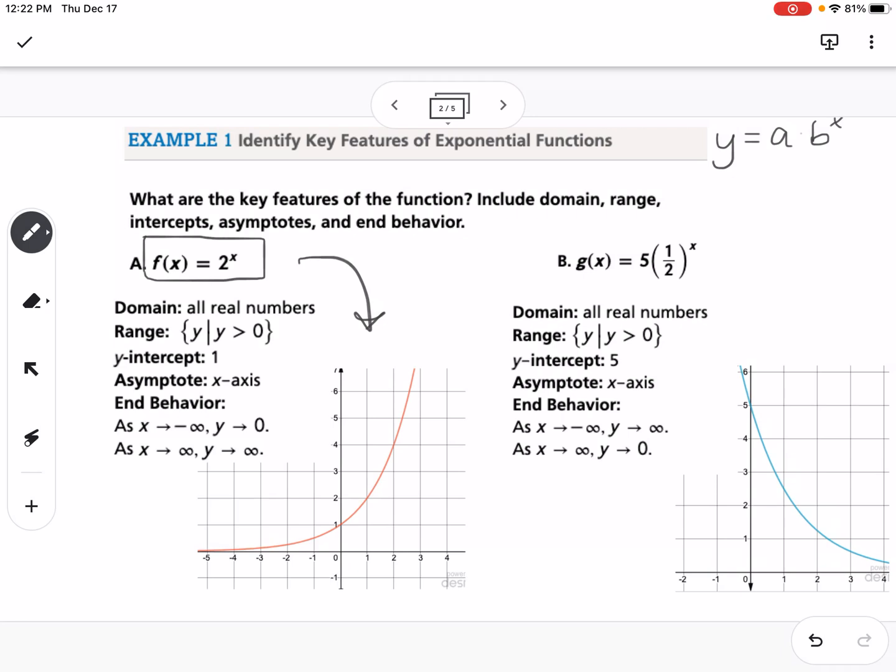So if you look at the 2 to the x, another way of writing it would be f of x equals 1 times 2 to the x. Then it's a little bit easier to see the a and the b value. You can see that's why our y-intercept is at 1, and our growth rate is 2, so that's why it's increasing.